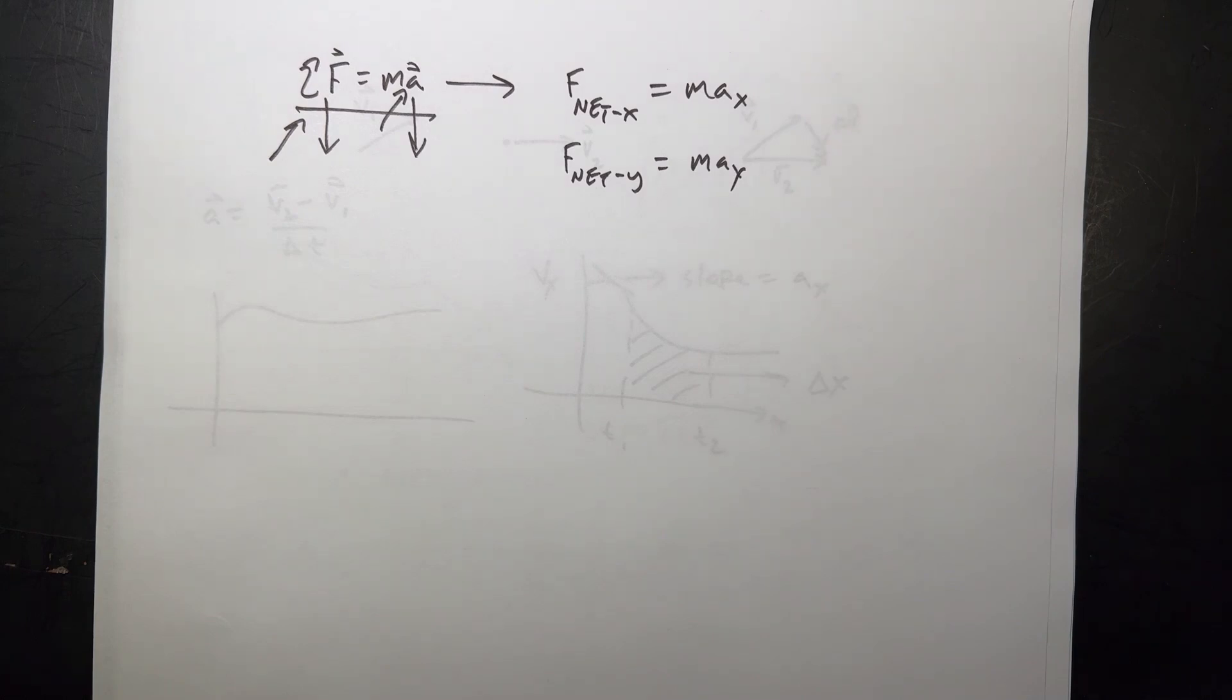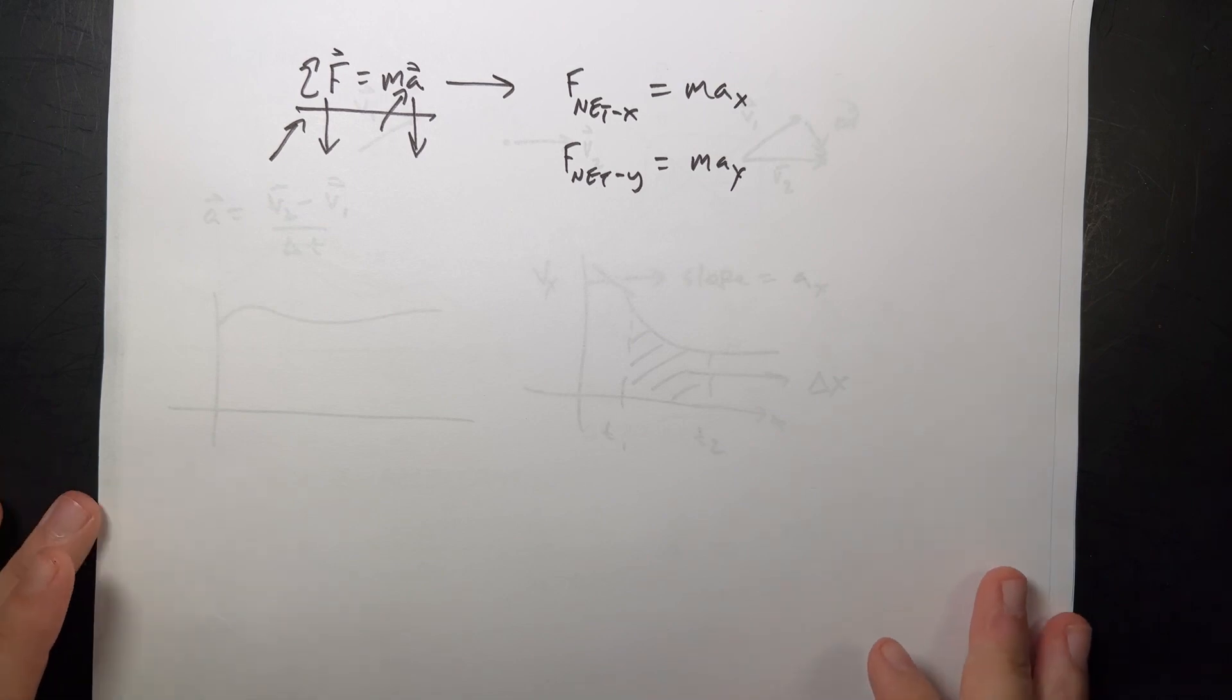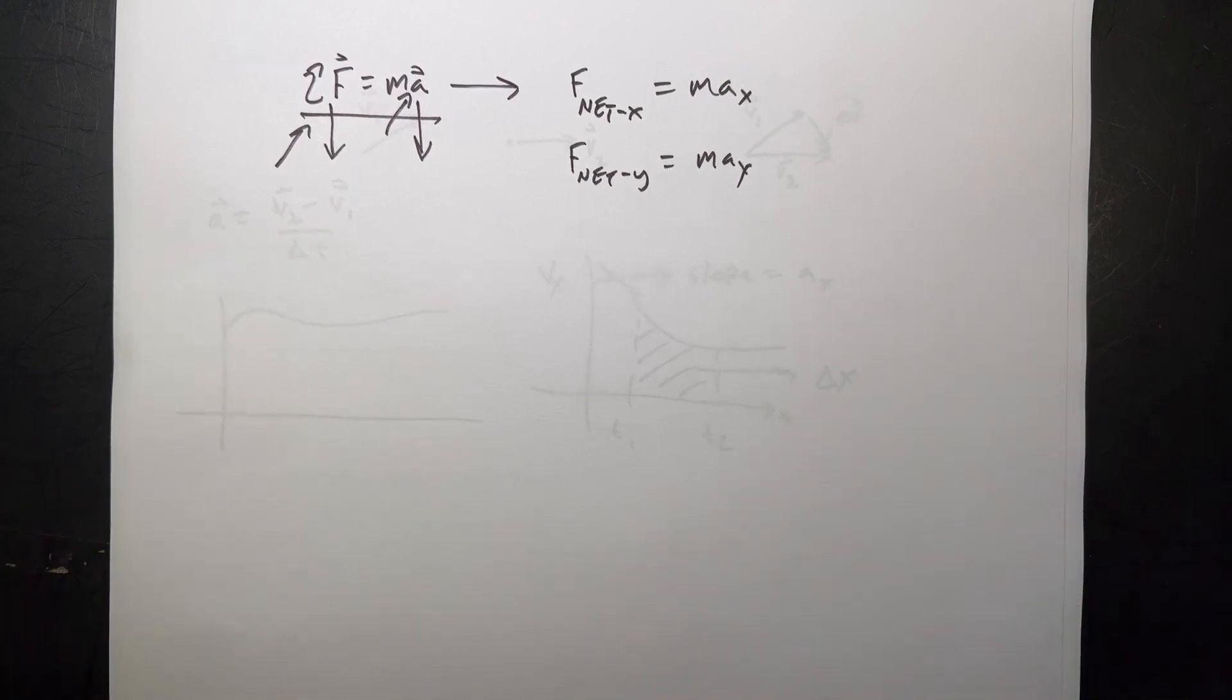They also have in this chapter a thing about relative velocities. I think it's not useful and I'm not going to cover it just because it gets too confusing. And I'd rather just focus on the most important things of Newton's second law. And that's chapter two.